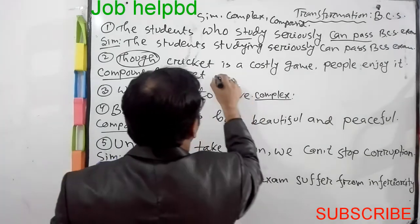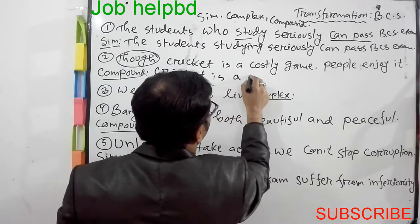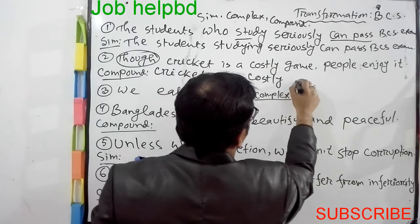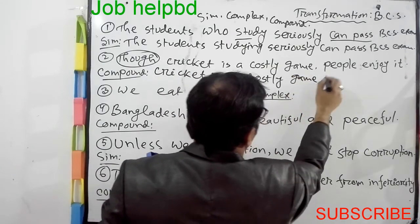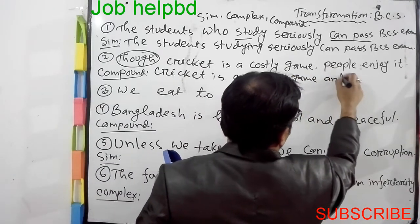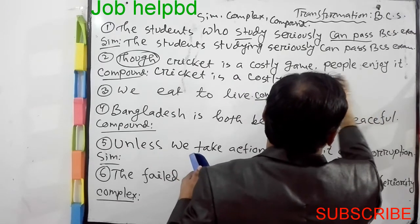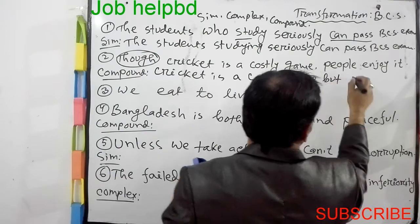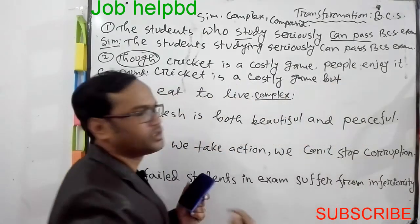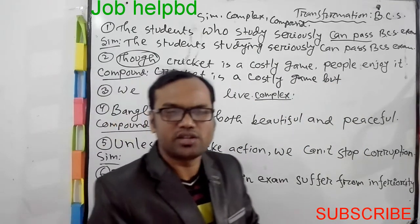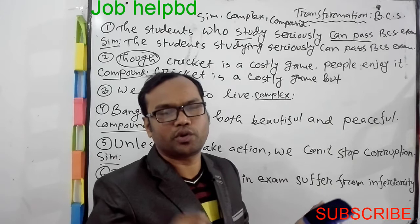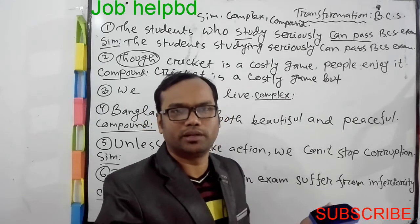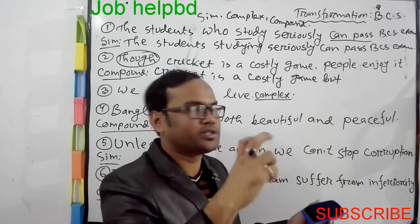A compound sentence can have both clauses joined by a conjunction. Which conjunction is used? In this channel, I have a freehand writing and spoken course which covers simple and complex structures.